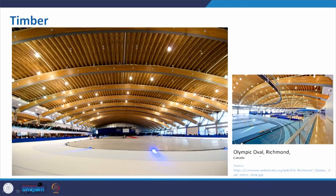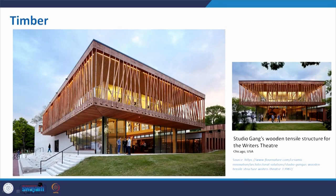One example of timber in large-scale architecture is the Olympic indoor stadium in Canada, where wooden structural members act like beams. Another example from Chicago also uses wood for external supports, showing how nicely the wood members can be joined.